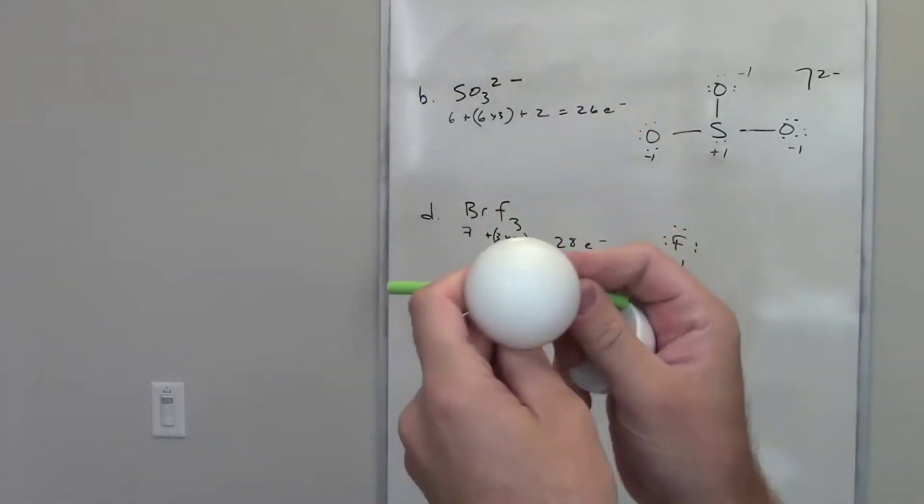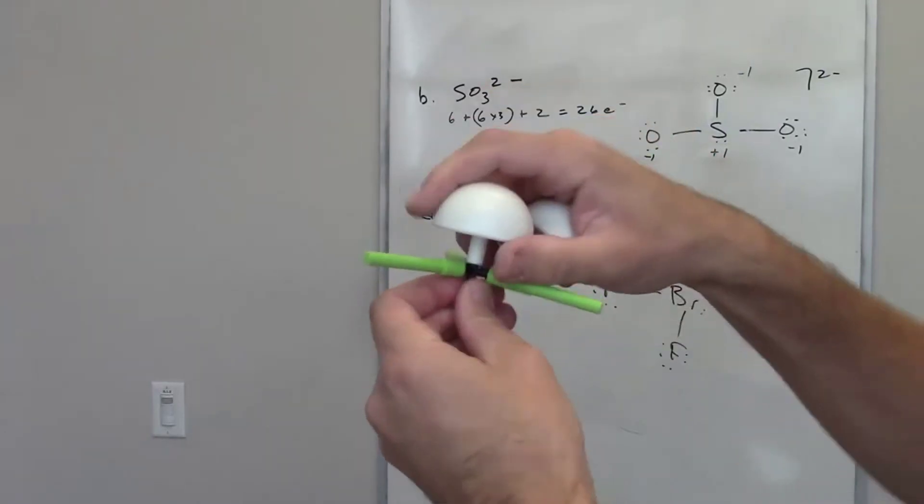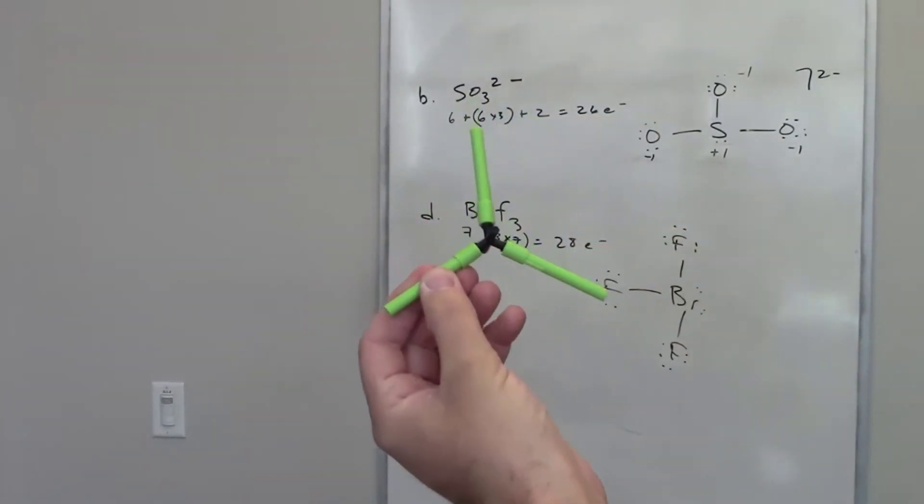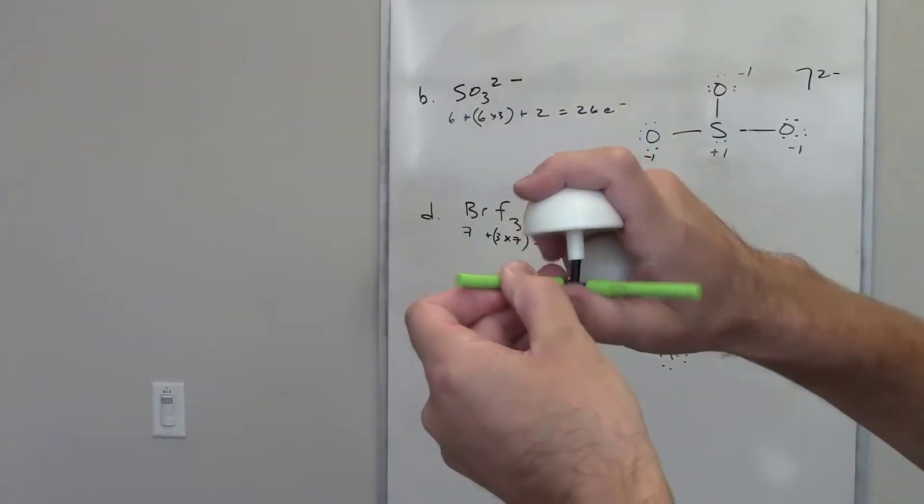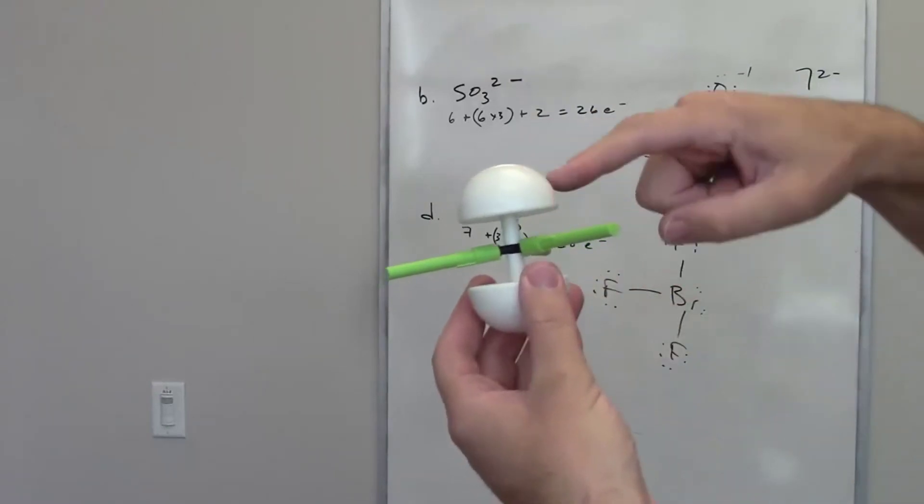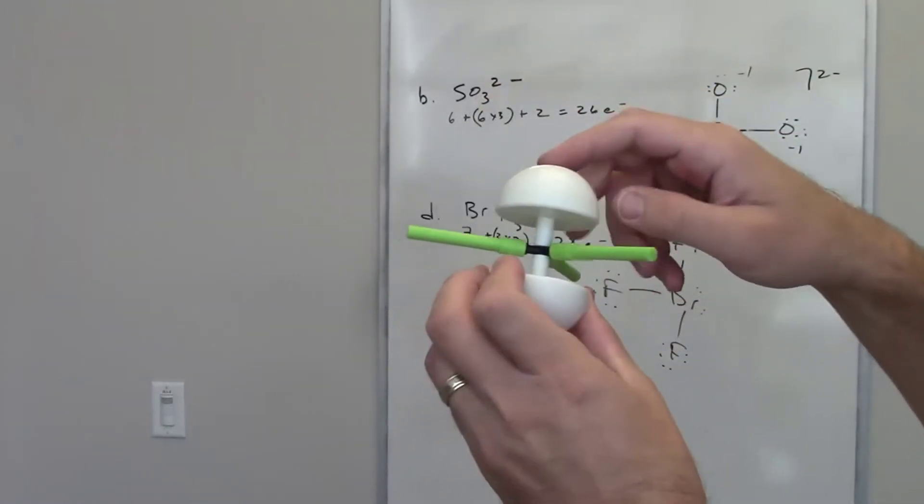You might imagine a couple other ways we could do it. You could imagine, for example, the three fluorines all being in a trigonal plane. If they're all on the same plane, they're 120 degrees apart. And then these lone pairs would be right here. And they would be 90 degrees away from each of the fluorines and 180 degrees apart from each other.